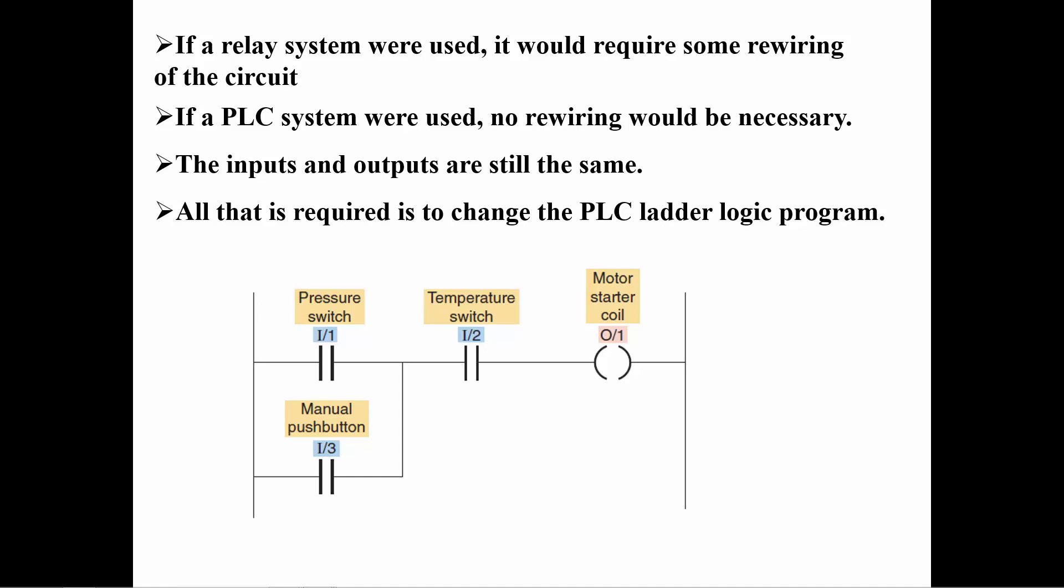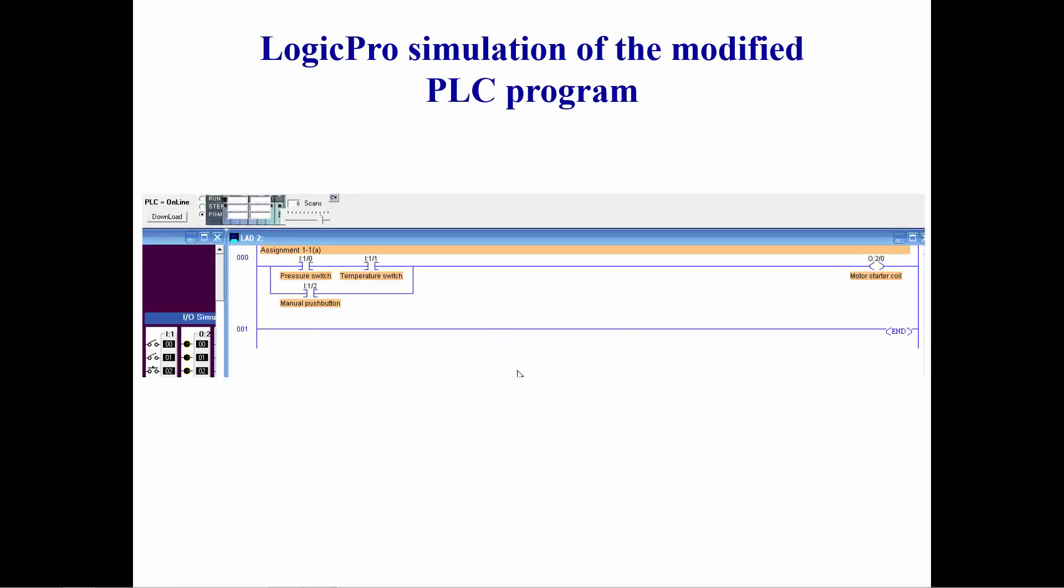With the PLC we can select the instruction and drag it to the new location, changing the logic of the circuit. This is the new circuit that we want to create. You would move the mouse over the temperature switch instruction and click and drag it and drop it in the new location, therefore changing the logic that turns on the motor starter coil.